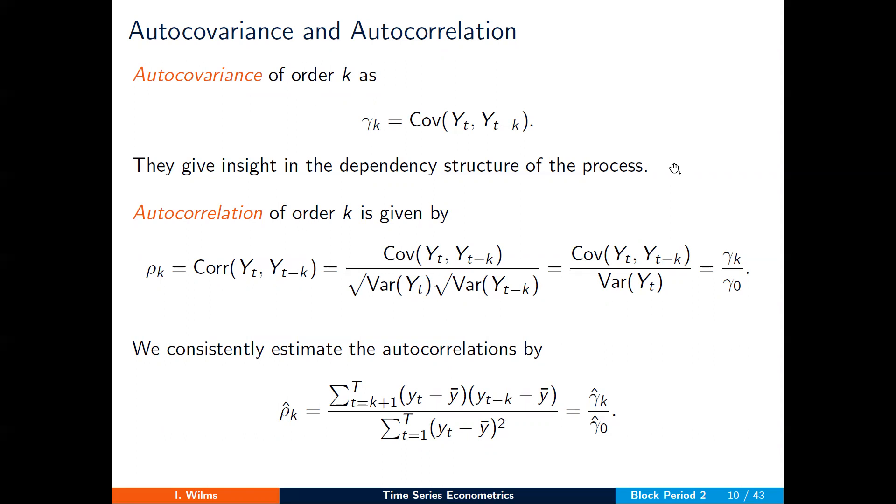These autocovariances give us insight in the dependence structure of a process, namely how persistent a time series is. Strong persistency would mean that subsequent observations have a strong tendency to stay close to each other. The example of a temperature time series would be a good example over here.